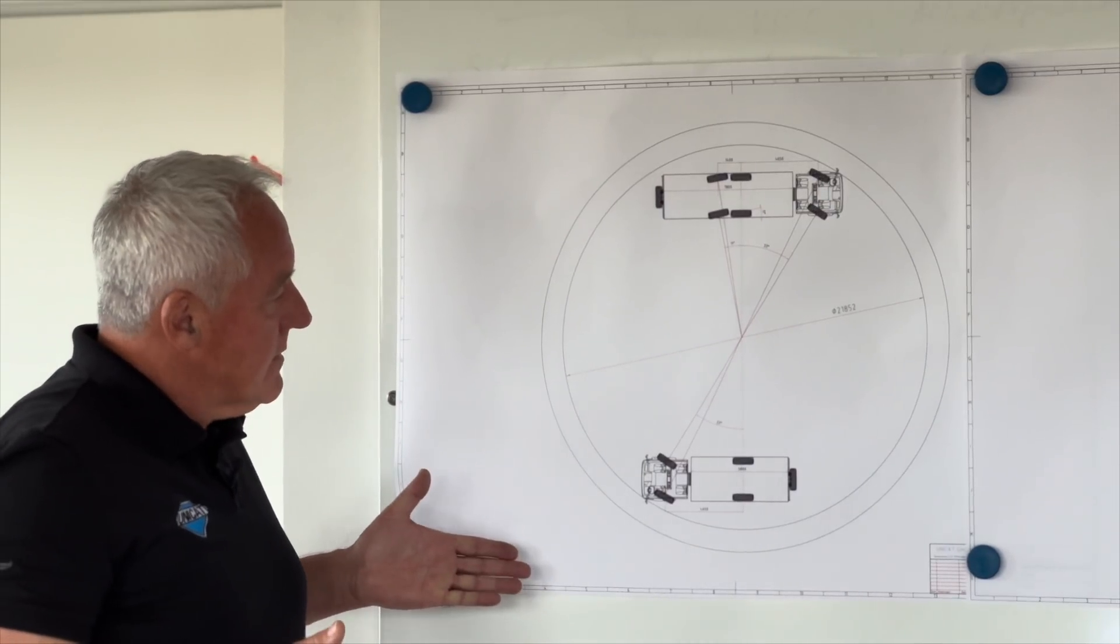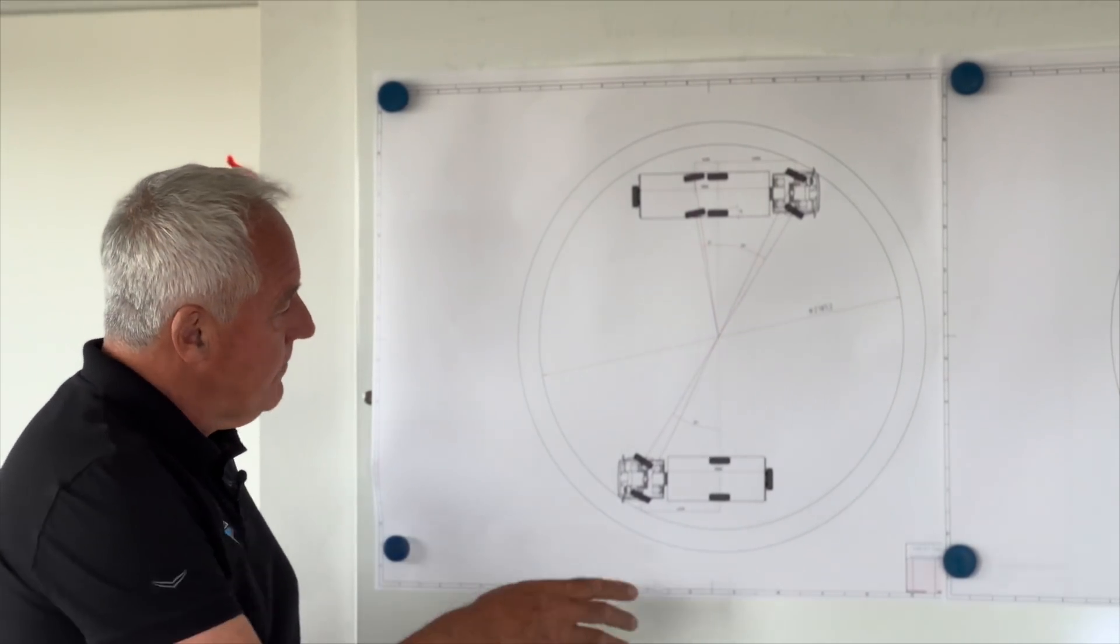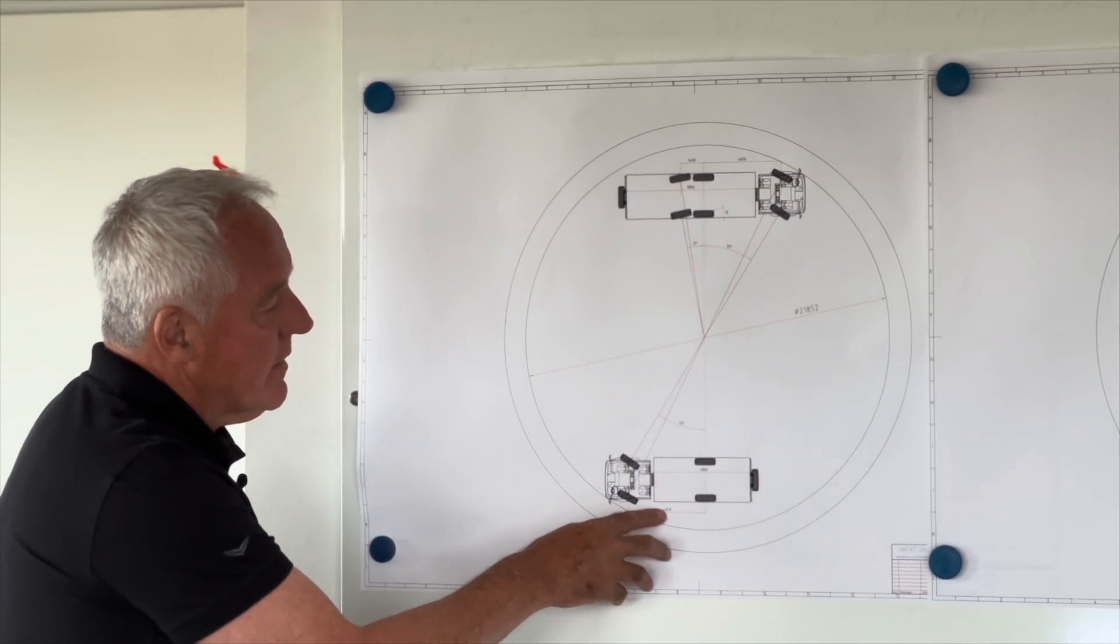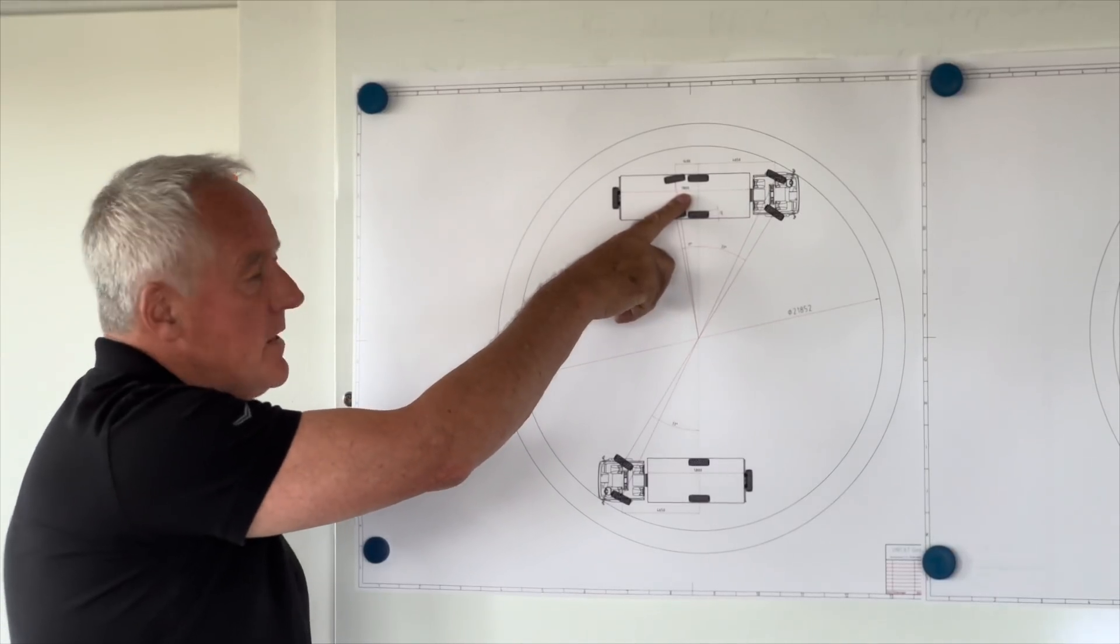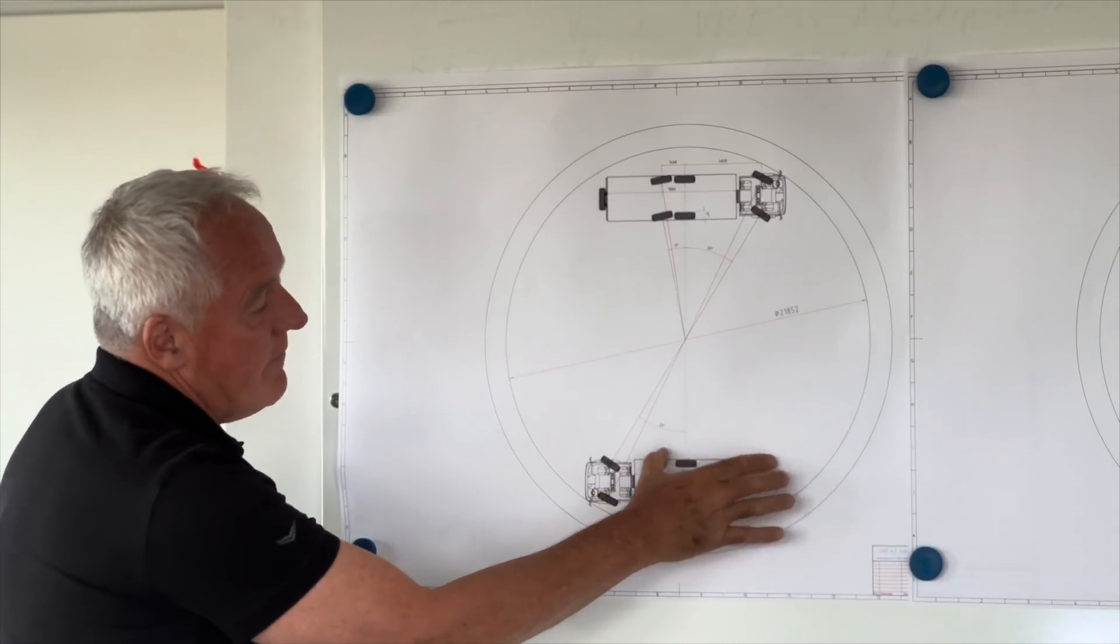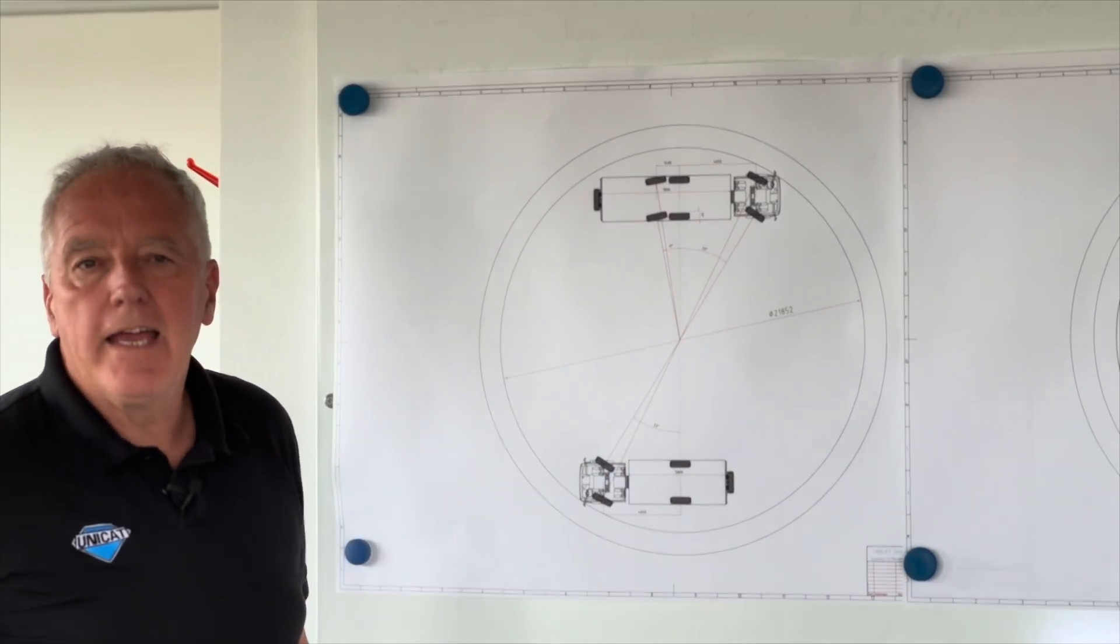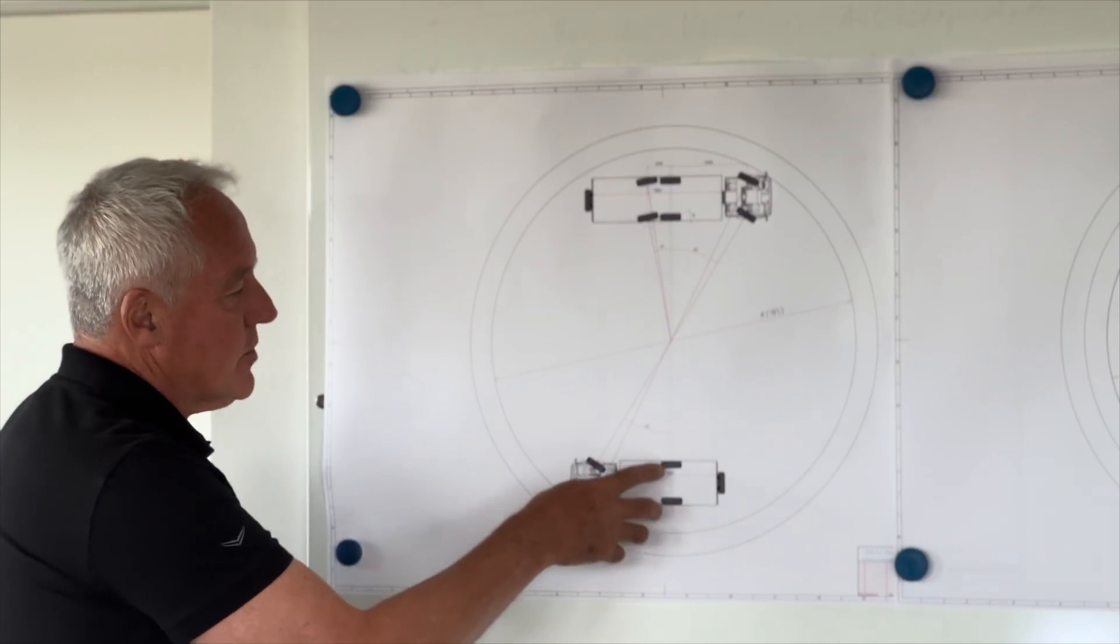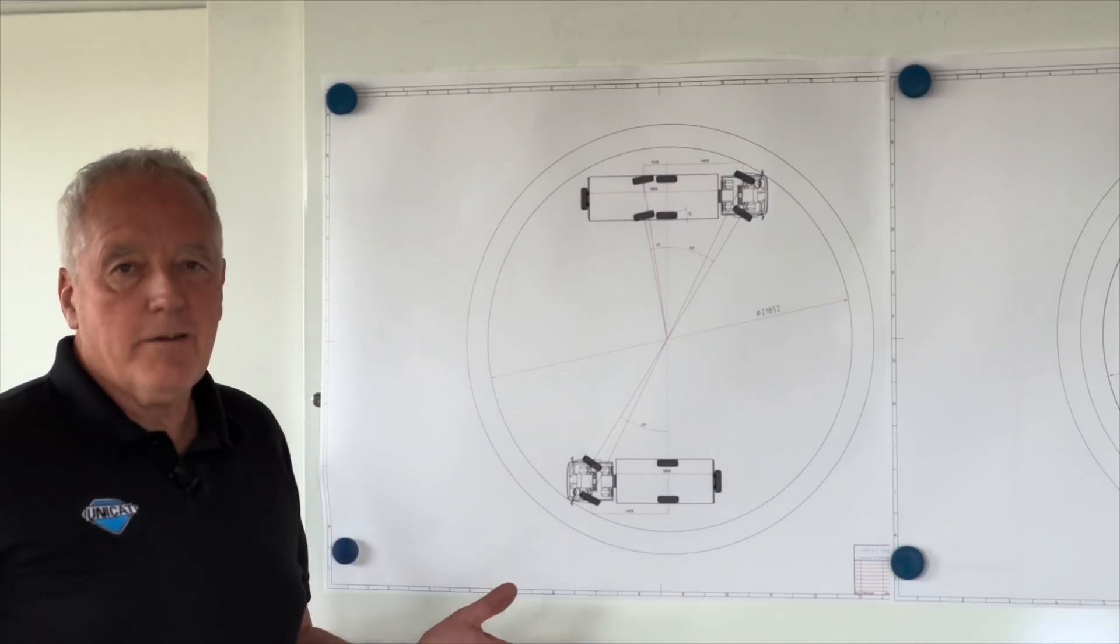Now if you say, well, but the 4x4 is more maneuverable, that's actually not true. Here we have made a similar vehicle. Also with 4650 millimeters wheelbase. But here we have a body length of 7.8 meters, and here we have a body length of 5.8 meters. And you can't do a 7.8 meter body on a 4x4. You get too much overhang, very bad angle of departure and way too much weight on the rear axle. So the 4x4 is just limiting the body length quite a lot.